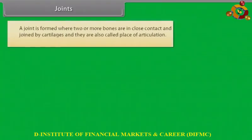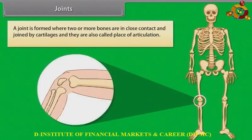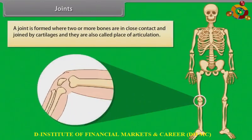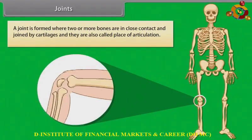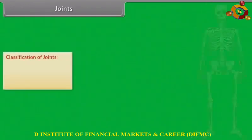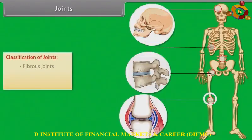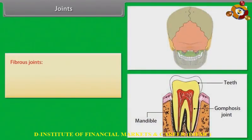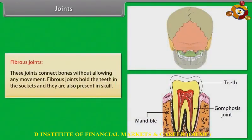Joints. A joint is formed where two or more bones are in close contact and joined by cartilage; they are also called places of articulation. Classification of joints: fibrous joints, cartilaginous joints, and synovial joints. Fibrous joints connect bones without allowing any movement. They hold the teeth in the sockets and are also present in the skull.